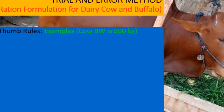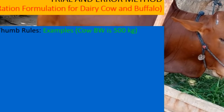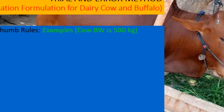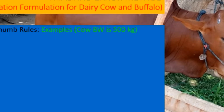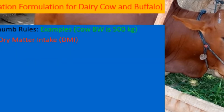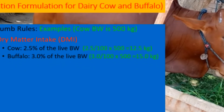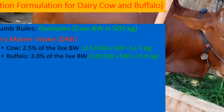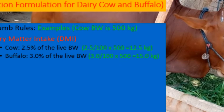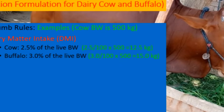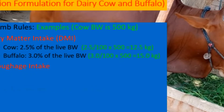Now I'll explain how to calculate the total dry matter intake for an animal consuming different feedstuffs. Total DMI is 2.5% for cows or 3% for buffalo. For a 500 kg buffalo, that is 15 kg of total dry matter intake. Roughage intake is two-thirds of total DMI, so two-thirds of 15 kg equals 10 kg.